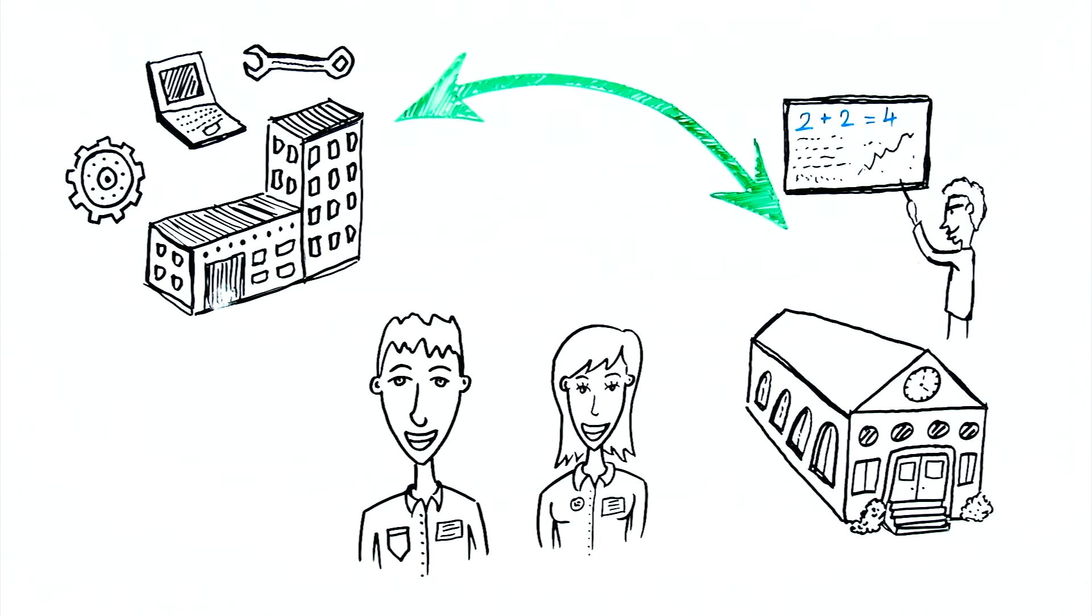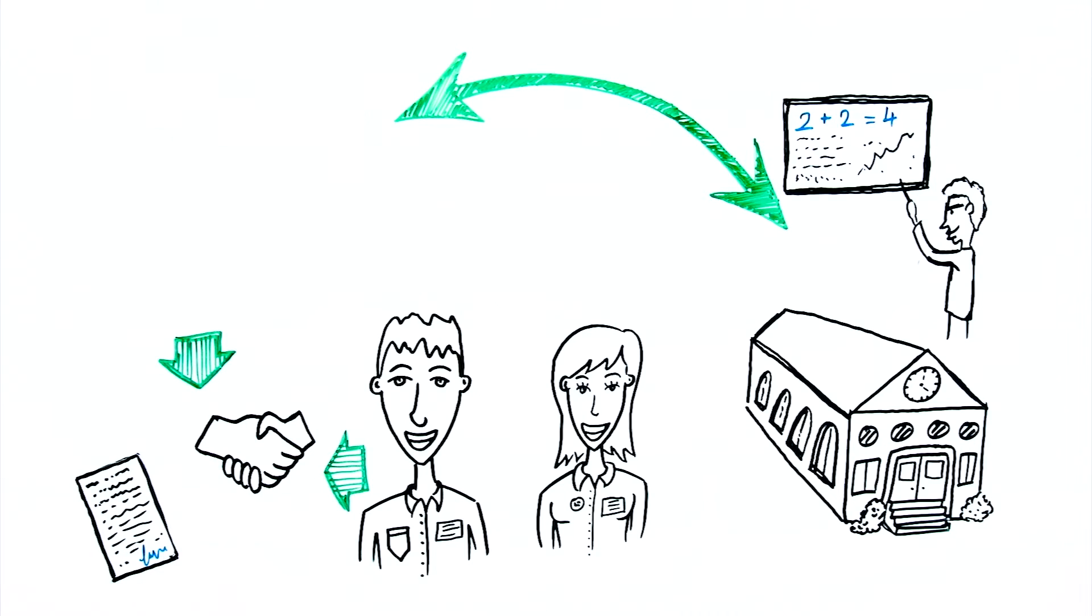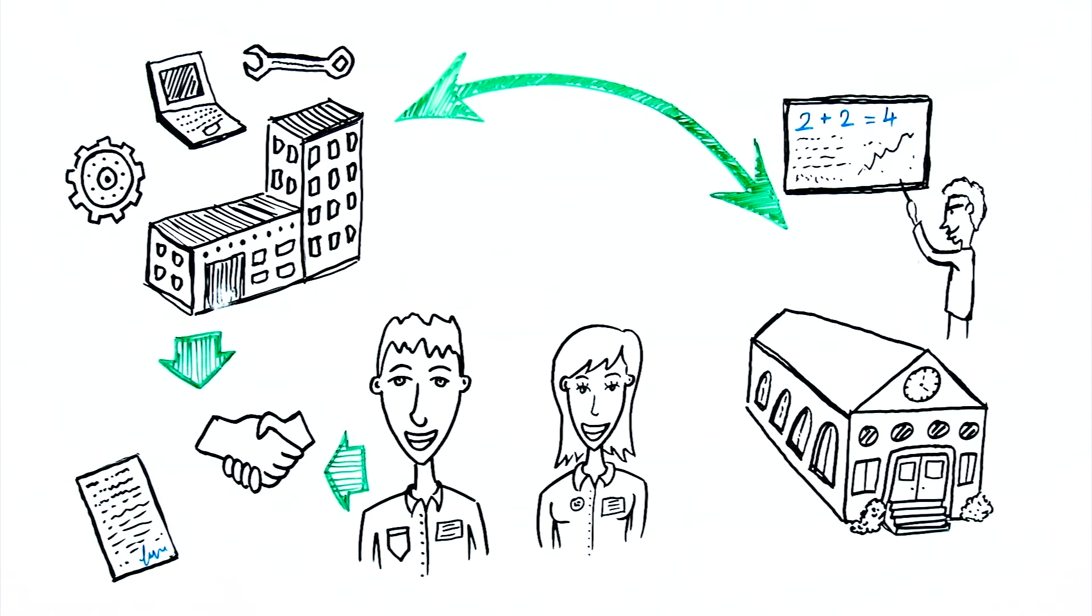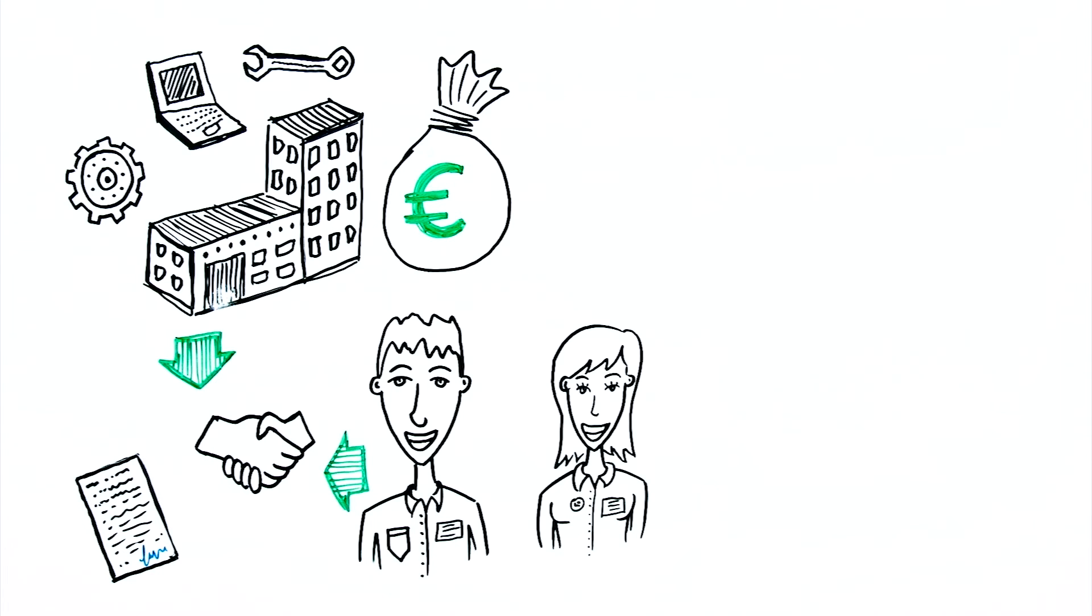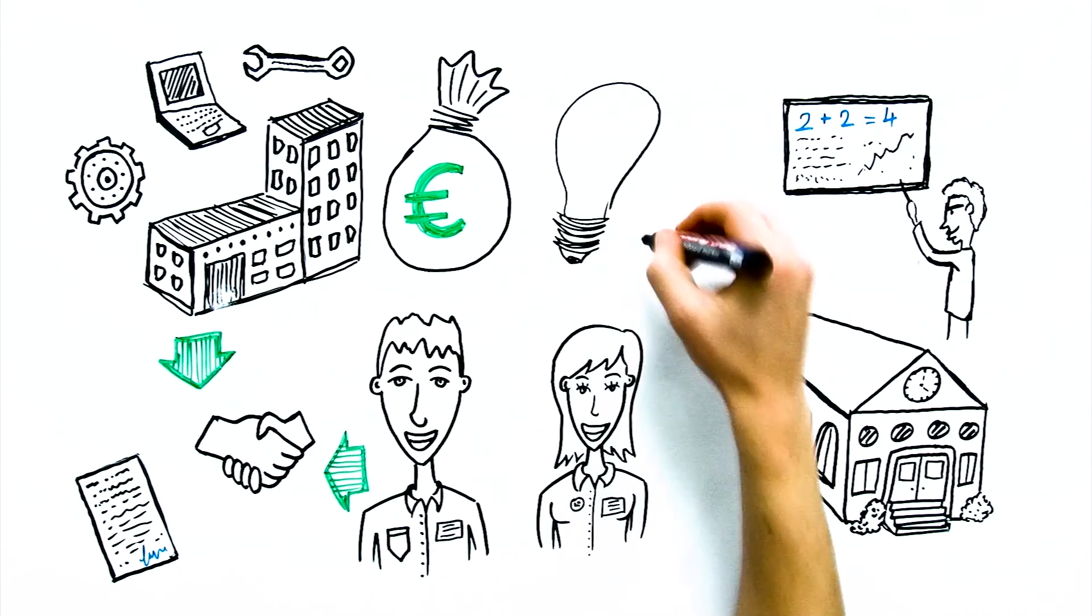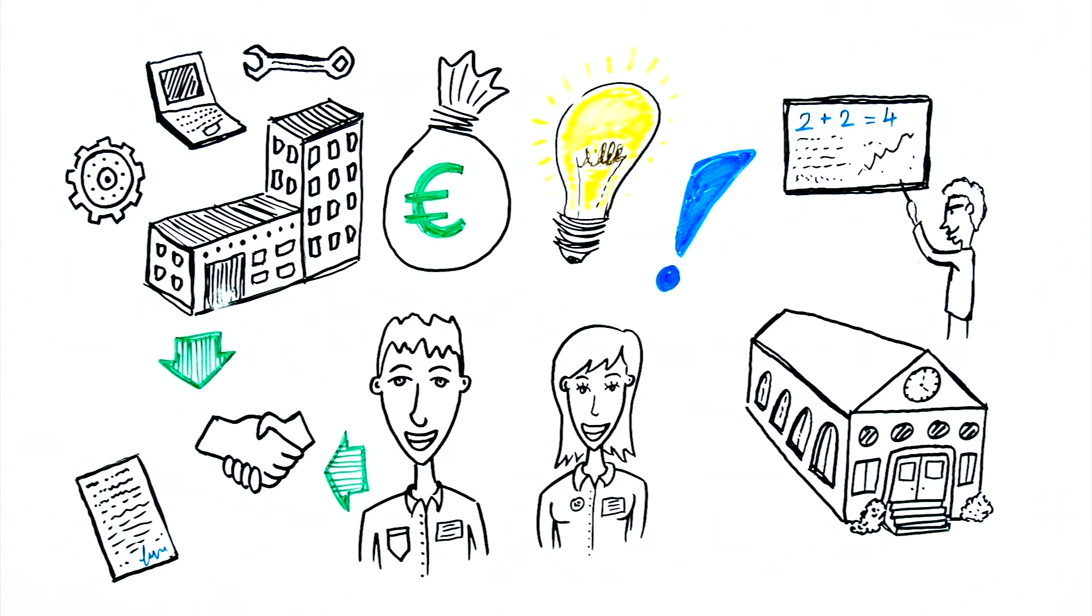At the start of your apprenticeship you sign an apprenticeship agreement with the company. You train at that business and learn the practical skills necessary for your chosen field. In return you receive money every month, a training allowance. In addition, you attend a technical college. Here you gain the more theoretical knowledge for your trade.